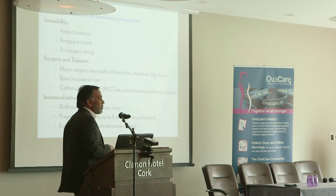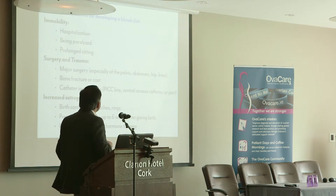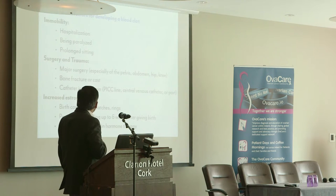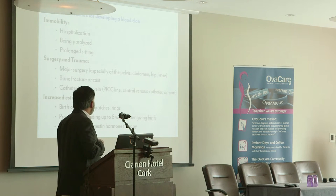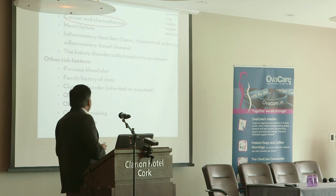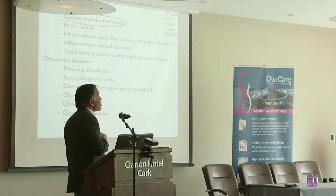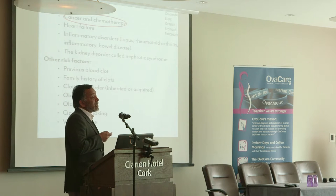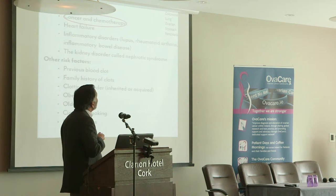Cancer patients with PICC lines or other lines placed in — because that injures the vein and also causes sluggish blood flow — so that increases the risk of clot. Other factors include increased oestrogen from different contraceptive devices, pregnancy itself, especially six weeks post-birth, and oestrogen especially in the treatment of cancer. Cancer and chemotherapy are major risks. There are some cancers with increased risk of developing clots — especially stomach, pancreatic, ovarian, lung, and colorectal cancers — these have the highest risk.